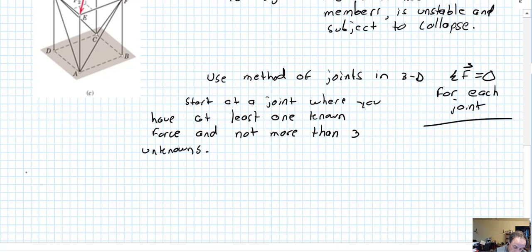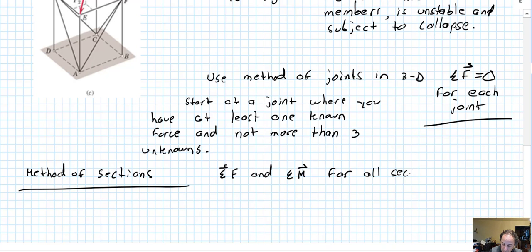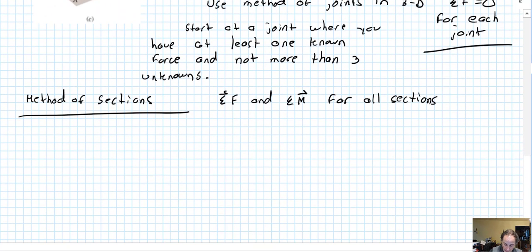Method of sections. It's really the same thing. Now we're doing sum of the forces and sum of the moments vectorially, all three dimensions, for all sections that you're investigating. These are vector equations, so they equal 6 scalar equations, 3 each.